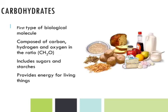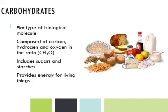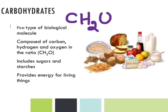The first type of biological molecule to know about are carbohydrates. Carbohydrates get their name because of carbon, hydrogen, and oxygen — 'hydrate' refers to oxygen. They're made of only carbon, hydrogen, and oxygen, and they have a certain ratio of those atoms: for every one carbon, there are two hydrogens and one oxygen. So we say they have the ratio CH₂O.